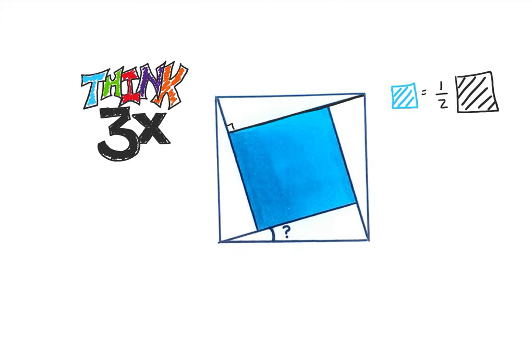What we have here is a blue square that we create inside of our black square. We do this with a few line segments, just four line segments. And we're given that the blue square's area is equal to one-half the area of the total square.